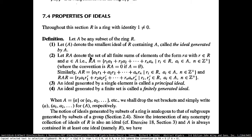Similarly, you can do it the other way around. Instead of RA, you can have AR, and you can also have RAR, containing two elements from the ring and another element from the subset A. Take the product, then have the finite sums, and have the set.